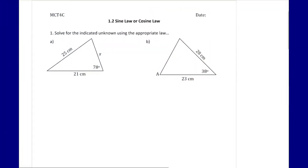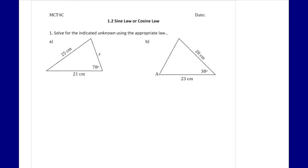In today's lesson we are going to be looking at using the sine law or the cosine law. We talked about this in the last lesson, so we're going to continue to look at these two laws and how we can use them — sometimes combining them — to find a missing piece of information in a triangle. For both these triangles we want to find the indicated unknown: in triangle a we're looking for side x, and in triangle b we're looking for angle A.